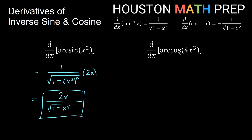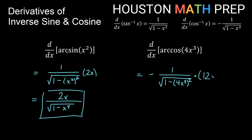For the last example, the derivative of arc cosine of 4x cubed, we use the negative formula: negative 1 over the square root of 1 minus (4x cubed) squared. By the chain rule, we multiply by the derivative of 4x cubed — using the power rule, the 3 comes out and multiplies to give 12x squared. Simplifying, we get negative 12x squared over the square root of 1 minus 16x to the sixth.